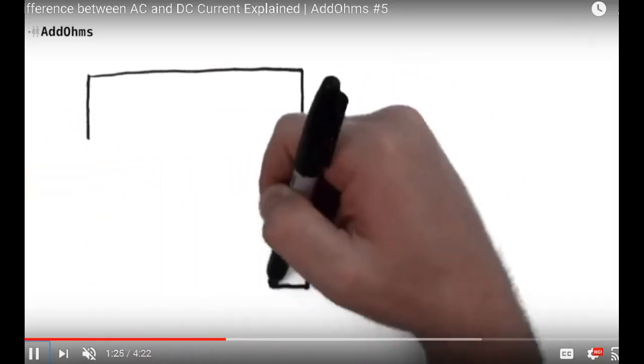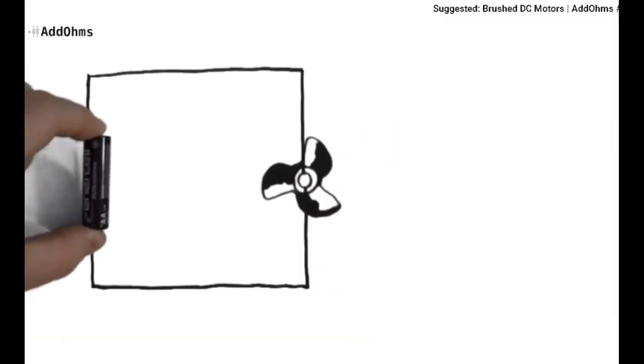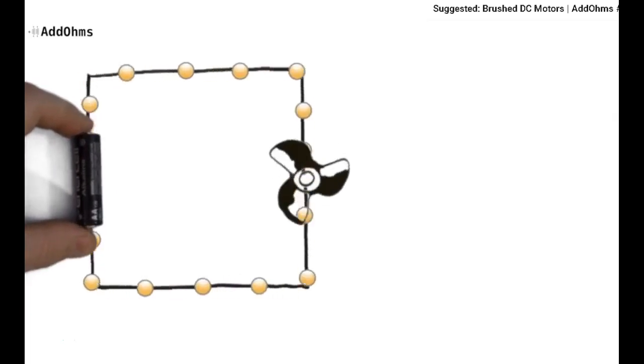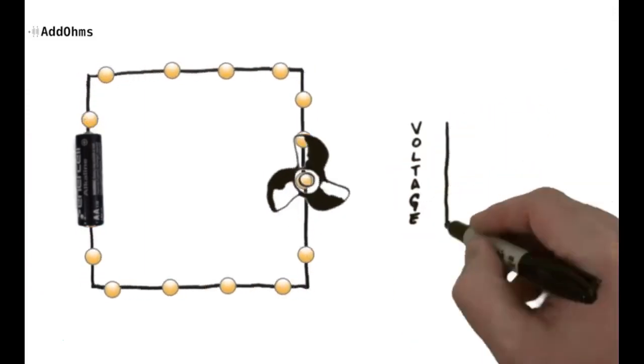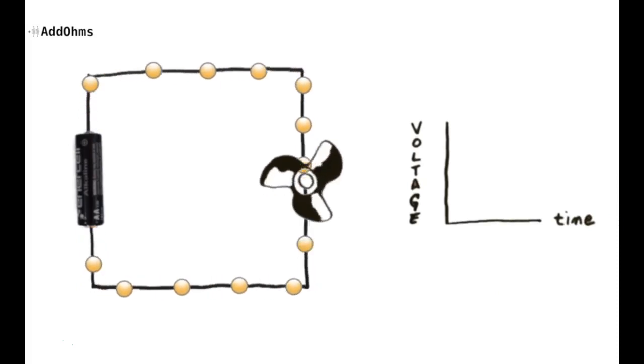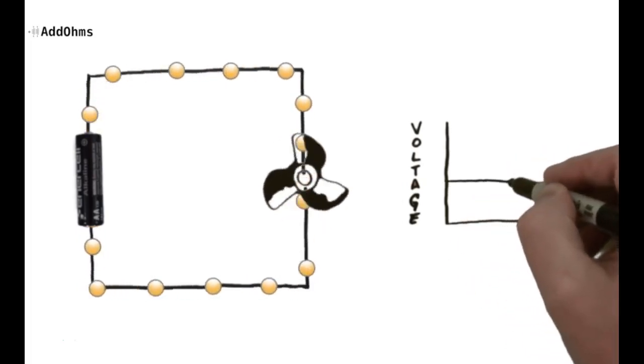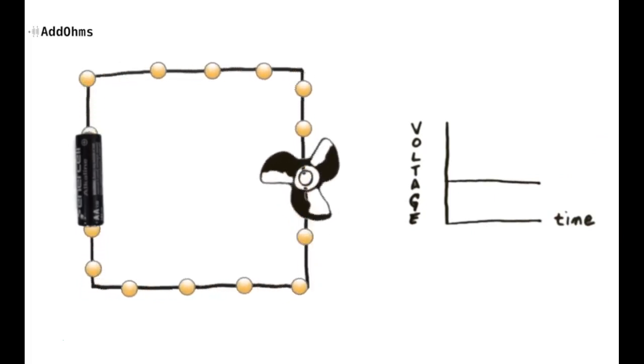Here we're creating a circuit with a battery and a motor, a direct current motor. We put our battery in there, and this is direct current. The electrons flow from the negative to the positive terminal. If we graph voltage over time, the voltage would stay very steady for a direct current motor.